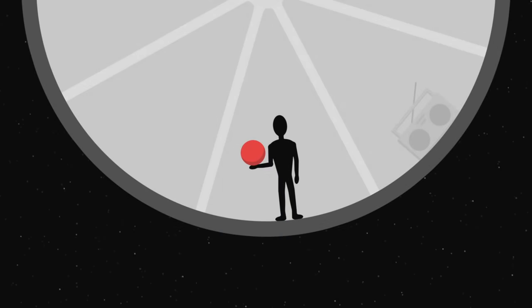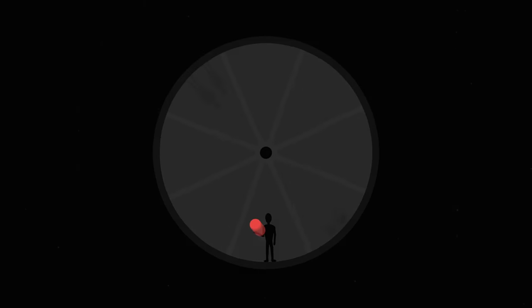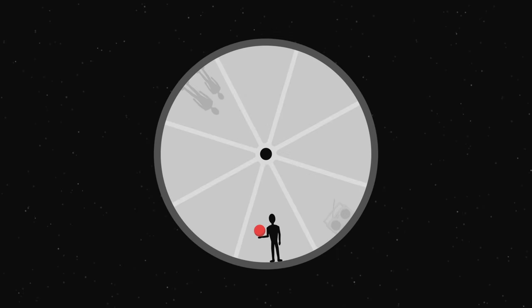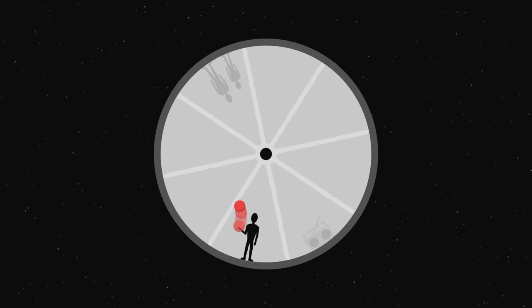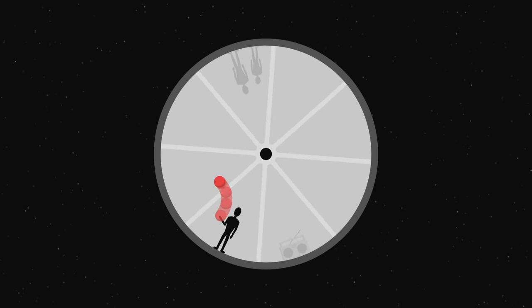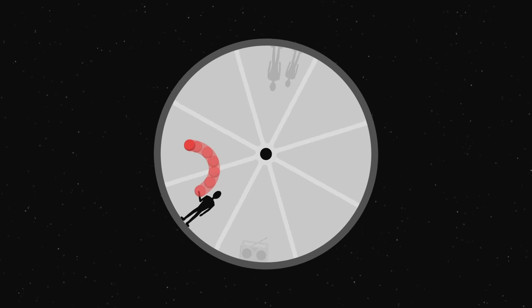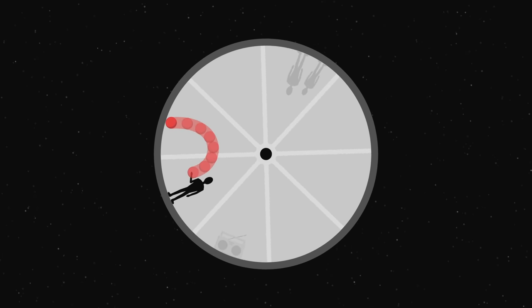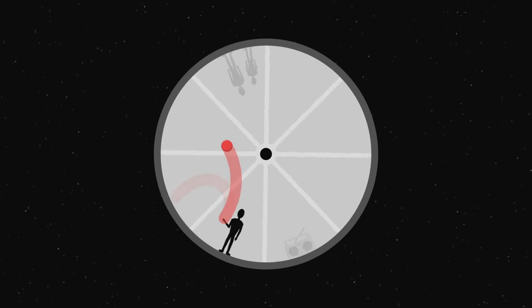Now imagine that the astronaut throws the ball upwards. Like before, once released, the ball travels in a straight line until reaching the edge of the wheel. But for the astronaut, the ball leaves his hand, falls back down due to the centrifugal effect, but it also seems to deviate slightly as it lands in front of his feet. If he throws it higher, the ball falls even further.